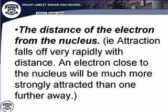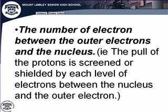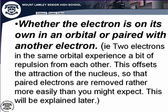An electron in a lower principal energy level will require a lot more energy to remove it than an electron in a higher principal energy level. Another factor is the number of electrons between the outer electrons and the nucleus — those inner electrons screen or shield the outer electrons, and also provide a repulsive force that counteracts the attraction. Another factor is whether the electron is on its own in an orbital or paired — two electrons in the same orbital experience a little repulsion, so paired electrons are removed a little more easily than you might expect.